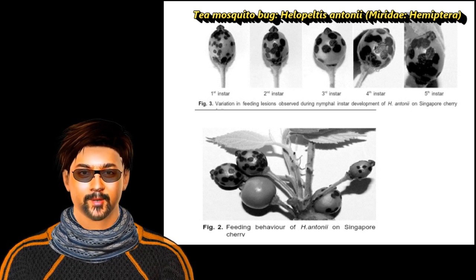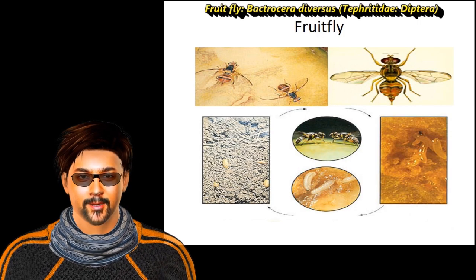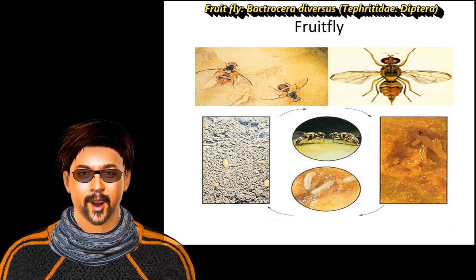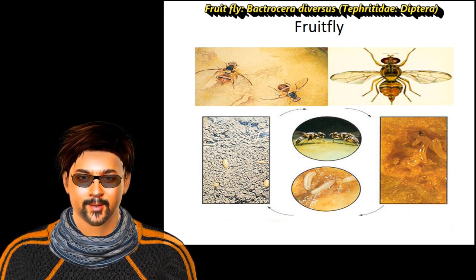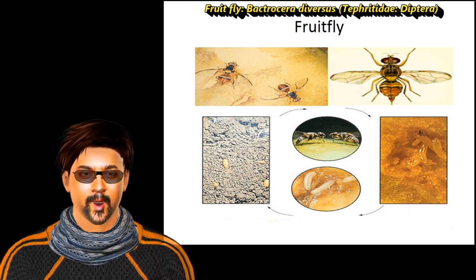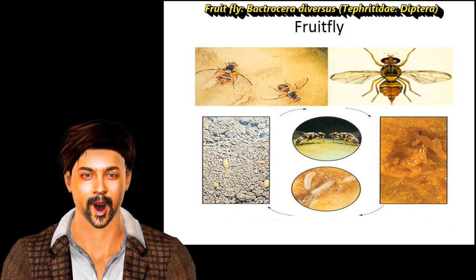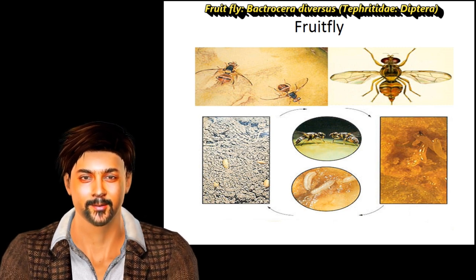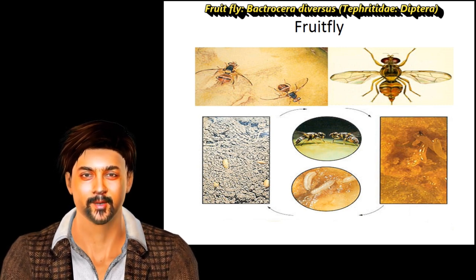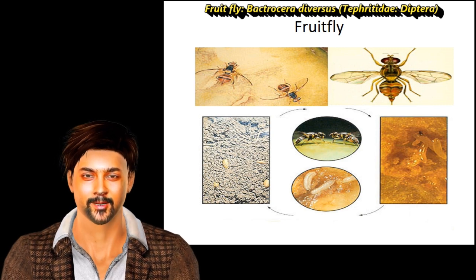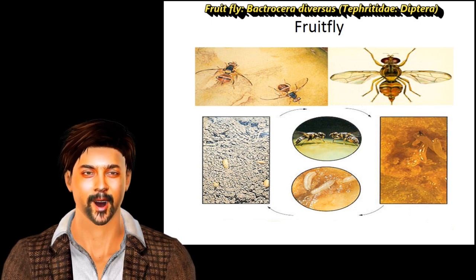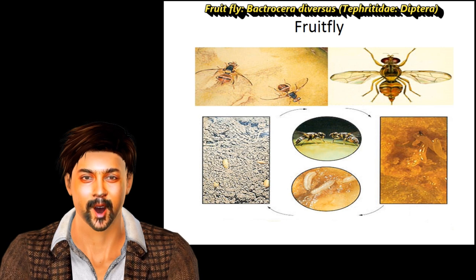The important borer pest is the fruit fly, Bactrocera diversus, family Tephritidae, order Diptera. Maggots bore into the fruits and feed on the soft pulp. The infested fruit shows a small cavity with dark greenish punctures, and when cut open, wriggling maggots are seen inside the fruit. The infestation causes rotting and dropping of fruits.